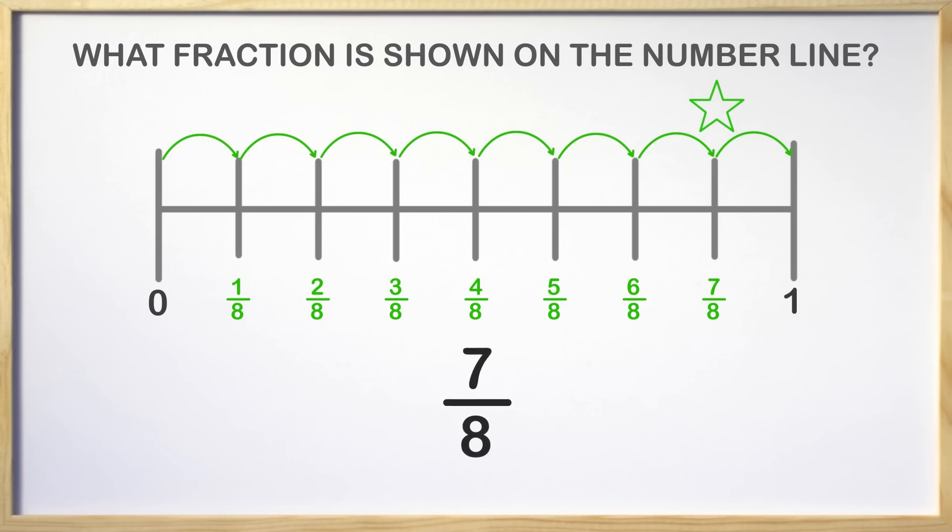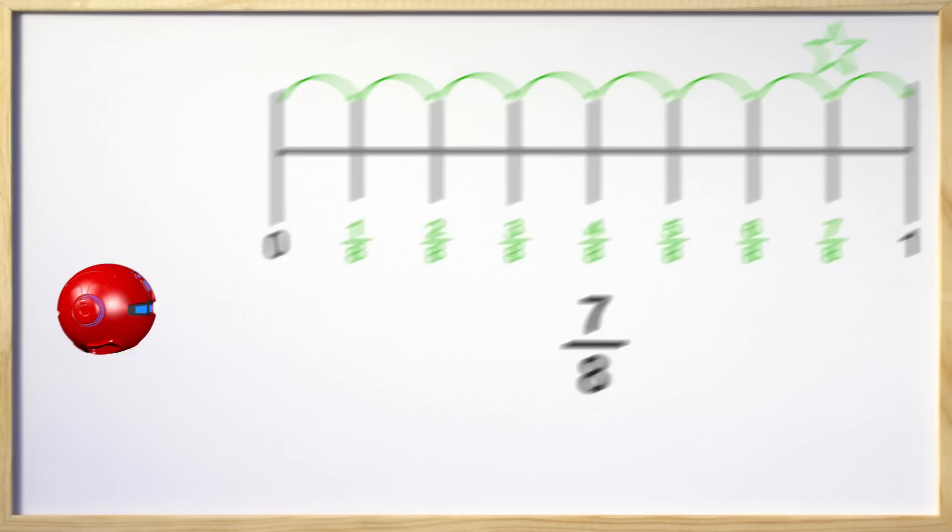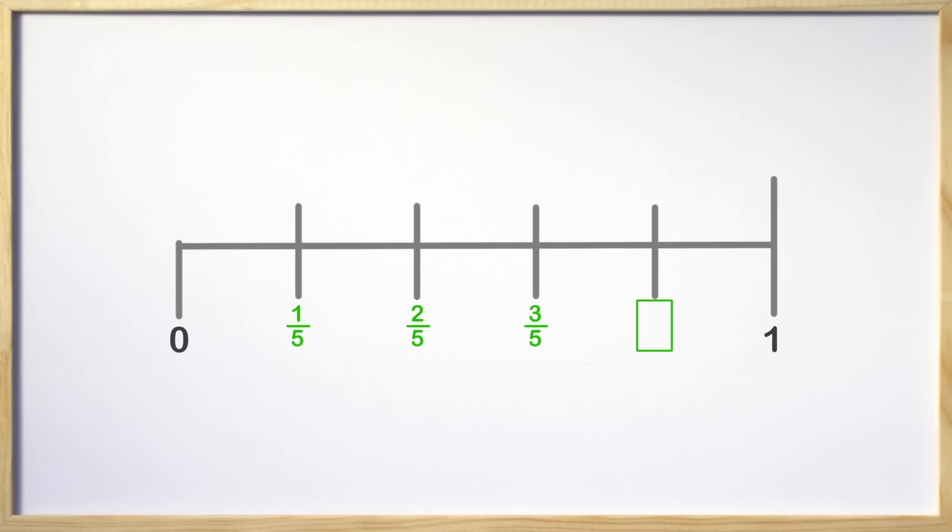Great job, guys! Let's take a look at another problem to see how we do. The problem says what fraction is missing. In this problem, we know a lot of things already. We know the denominator is five, so that means there are five total parts. You may have figured it out already, but let's count each part on the number line to find the missing fraction.